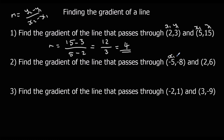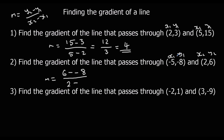Labelling x1, y1, x2, y2: the gradient is y2 (which is 6) take away y1 (which is minus 8). Minus minus 8 becomes plus 8, over x2 (which is 2) minus x1 (which is minus 5), so 2 plus 5. That gives us 6 plus 8 which is 14, over 7 — so the gradient is 2.